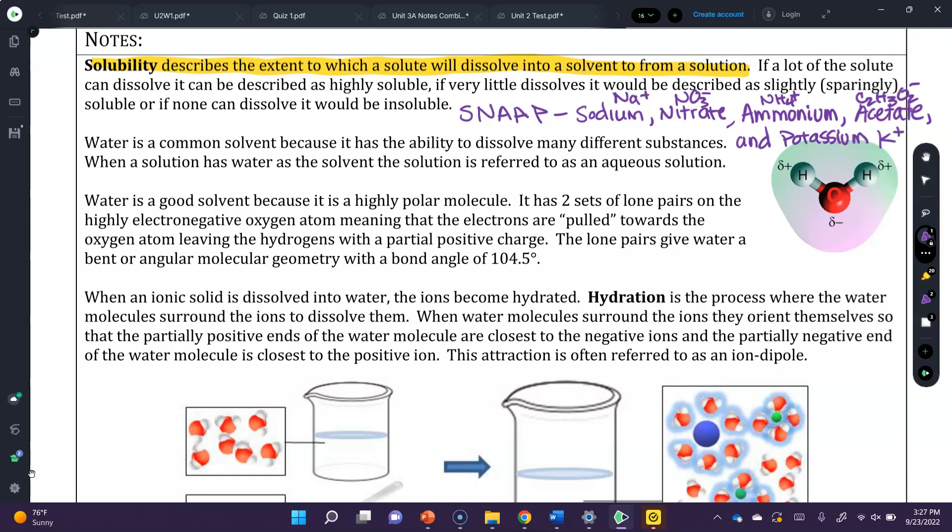So those are the ones you need to remember, and that these are always soluble. If we're talking about a compound or something in solution, these are good ions that would help us get something into solution that we normally wouldn't, because they're considered to be always soluble.